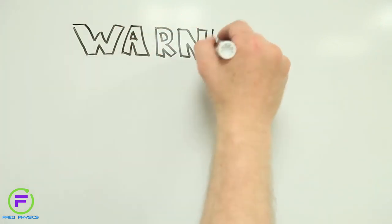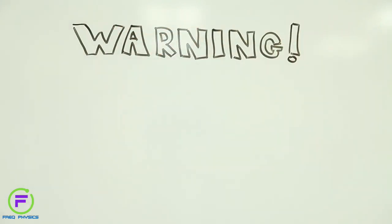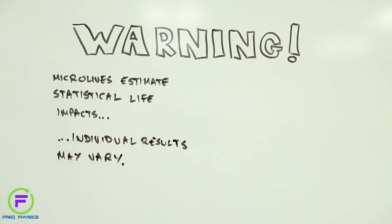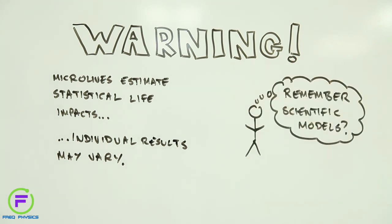Of course, Microlives are averaged over large populations. The chances that you personally will live 30 minutes longer because you just drank 3 cups of coffee are remote. And there are plenty of other factors to consider when it comes to understanding how long you will live, and the quality of your life as you age. But as a quick way of getting your head around what is good and bad for you in the long run, and making smart decisions on risks, they're pretty useful.